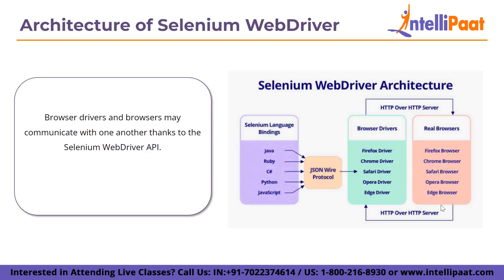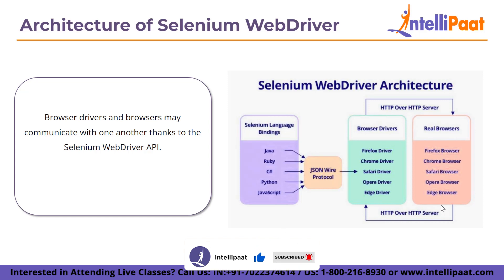When a block of code is executed, the JSON Wire Protocol converts the full block of code into an HTTP URL. The Chrome driver receives the converted URL. The browser driver uses the HTTP server to obtain the HTTP request, and as soon as it receives the URL, it sends the request over HTTP to the browser, causing the Selenium commands to be executed. If the request is POST, the browser performs an action; if it is a GET request, the response is created at the browser end and sent to the browser driver through HTTP, and then forwarded through the JSON Wire Protocol to the user interface.